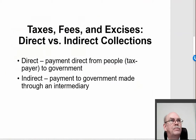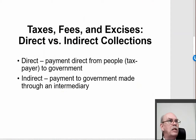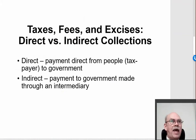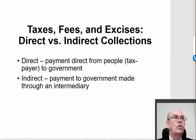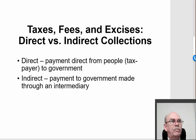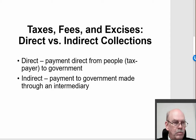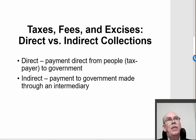Now let's talk more about taxes, fees, and excises. First, let's talk about direct collection versus indirect collection. Direct collection of taxes, fees, and excises means people pay the government directly. Indirect taxes means the government gets the money through somebody else. Direct: you pay the government directly. Indirect: you pay somebody else — this can be confusing.